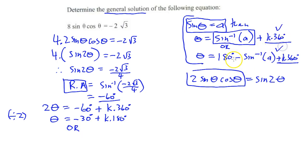Formula for the second one: 180 minus sin inverse of theta. So we're going to say 2 theta equals 180 minus, what's my reference angle? Minus 60 degrees plus k dot 180. 2 theta equals 180 minus minus 60 is 240 plus k dot 360.